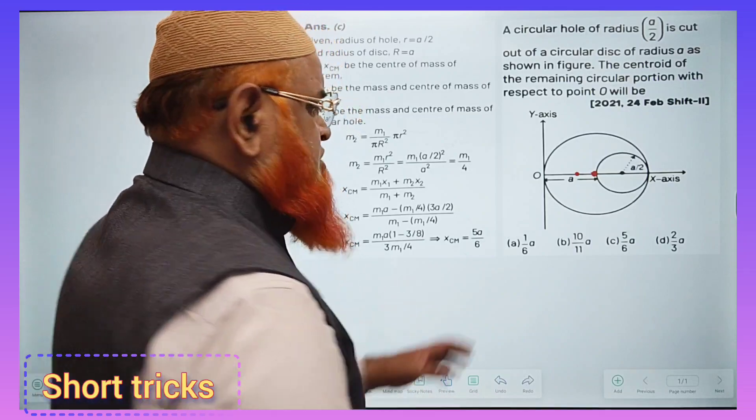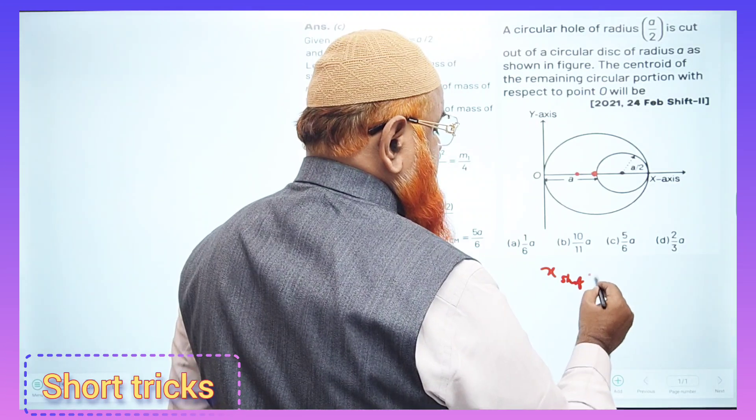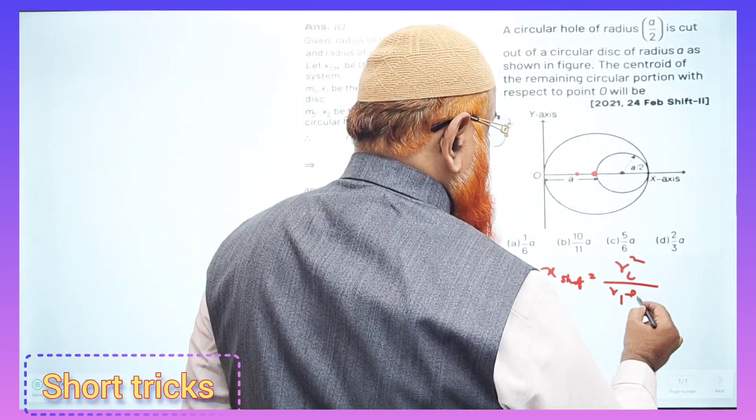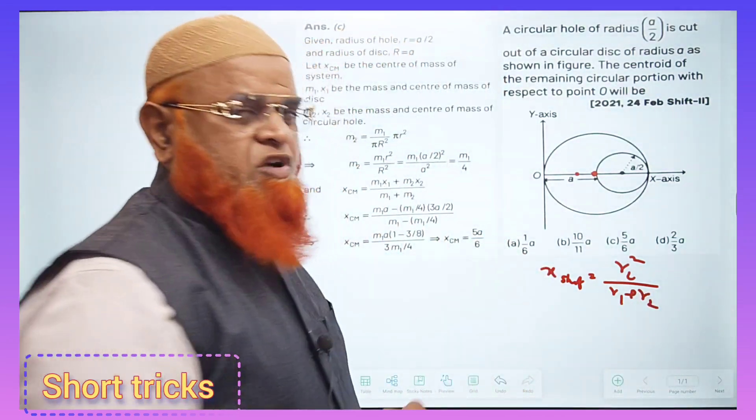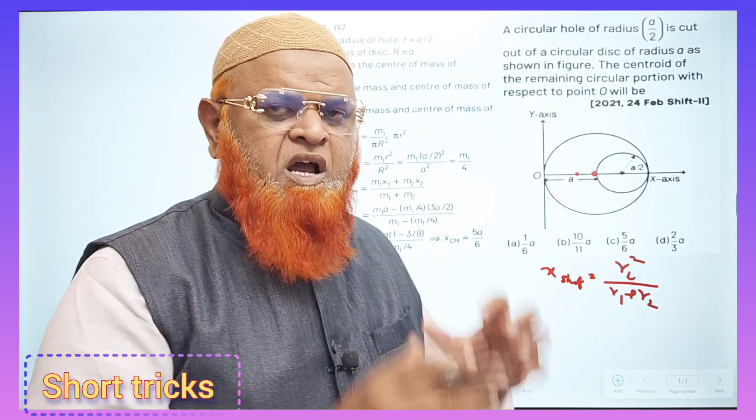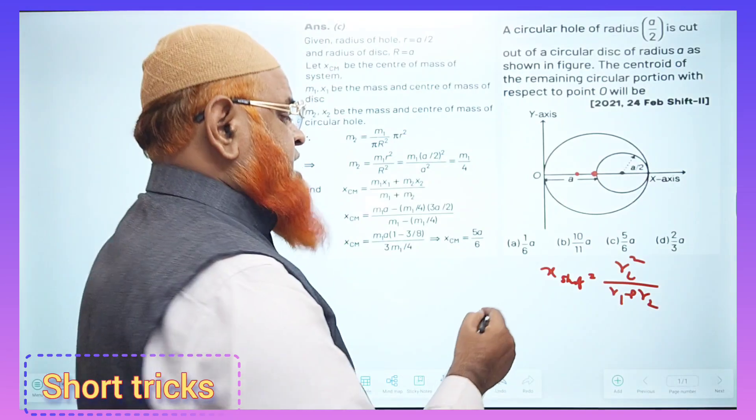You know that x shift can be considered as r2 squared by r1 plus r2 as a shortcut formula. It's a simple shortcut formula so that you can find out the shift especially for disks. Now let us see what is going to happen.